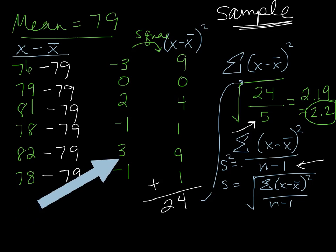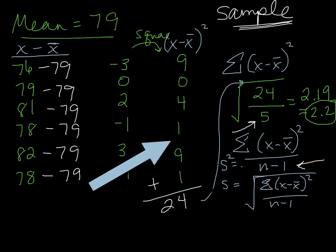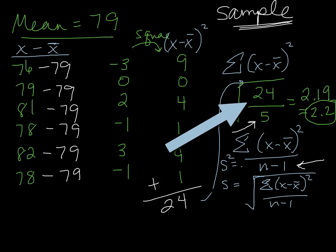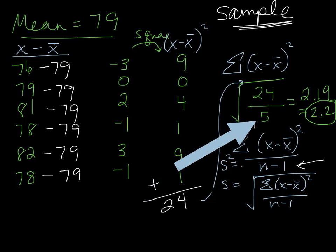Then we had to square all the distances. That's where this column came from. We added that list together and got 24, and then you divide 24 by either n or n minus 1, depending, and then take the square root.